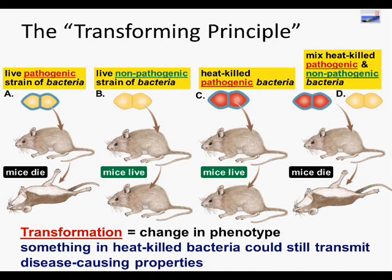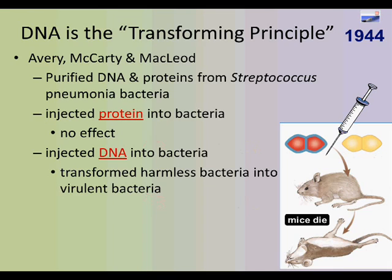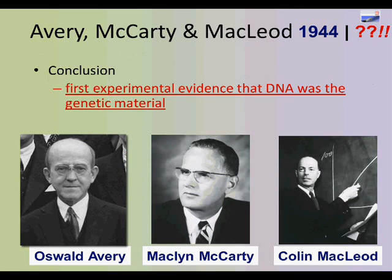That was essentially the end of Griffith's experiment. Avery, MacLeod, and McCarty picked up on this and took those same bacteria strains, purifying DNA from them. They weren't entirely sure what they had was DNA at first — it looked somewhat like a protein-based product. When they injected the protein into the bacteria, there was no effect. However, when they injected the DNA, they did see the transformation happen. This was our first evidence that something non-protein-based — a new substance called DNA — was the genetic material.